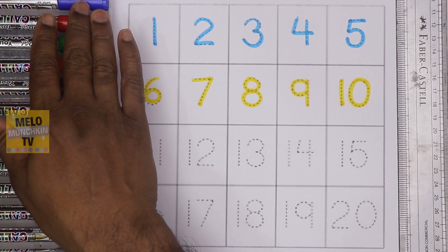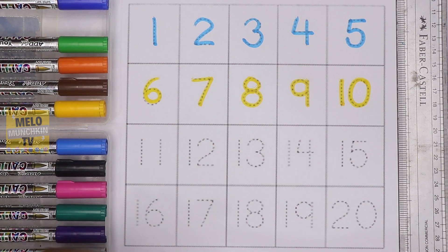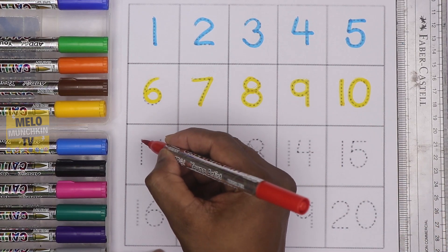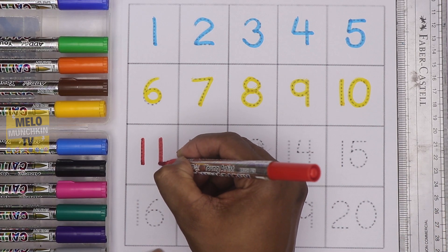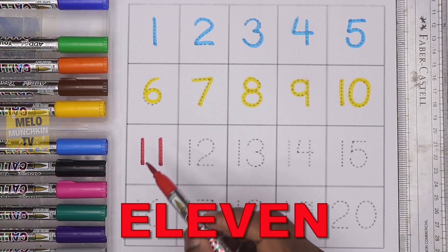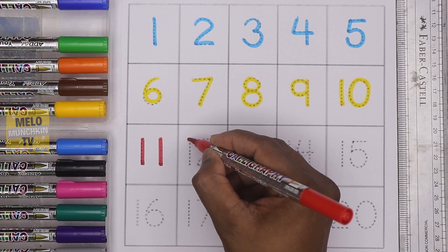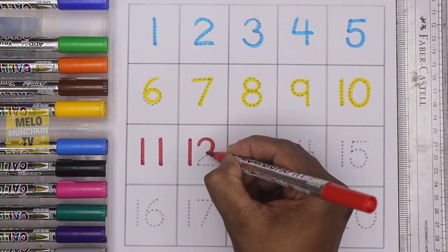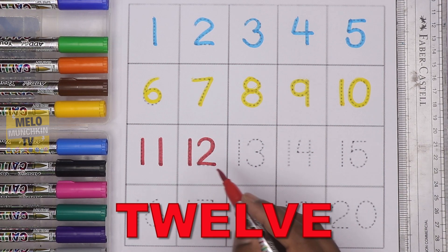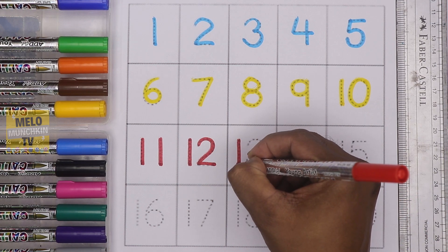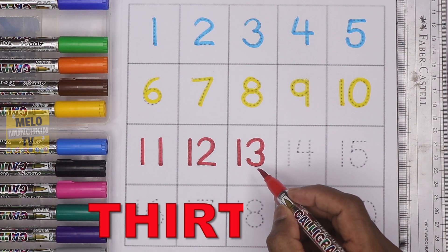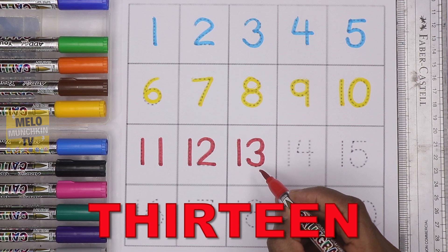Next I'll choose red color and write the third line. After 10 it comes 11, one-one, 11. The spelling is E-L-E-V-E-N, 11. Next it is 12, one-two, 12, T-W-E-L-V-E, 12. Next 13, one-three, 13, T-H-I-R-T-E-E-N, 13.